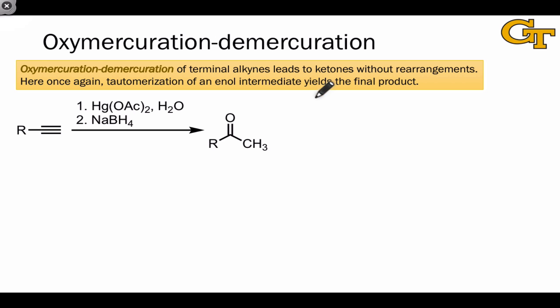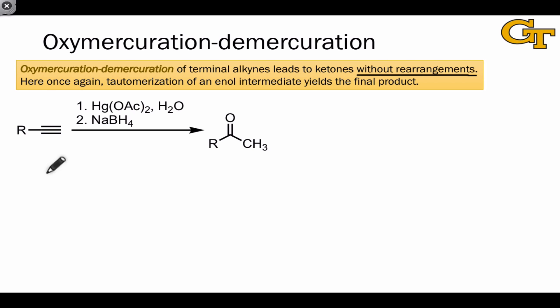The virtue of oxymercuration, which is a Markovnikov hydration method, is that it leads to methyl ketones when applied to terminal alkynes without the possibility of rearrangements. Those vinyl cations we saw in the acid-catalyzed hydration video are heavily susceptible to rearrangements because vinyl cations are relatively unstable. So oxymercuration can be synthetically very useful for substrates in which R could potentially support a positive charge, ensuring that 1,2-rearrangement doesn't complicate the outcome of the reaction.